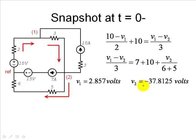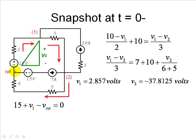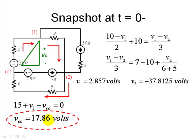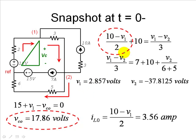But what we are looking for is actually the voltage in the capacitor in this circuit at zero minus. Going up from one node to the other using KVL: 15 plus V1 minus Vc0, that equals zero. From there we obtain that the voltage in the capacitor at zero minus is 17.86 volts — that is our first initial condition. The initial current in the inductor is given by the expression: 10 minus V1, divided by 2 ohms. Using that value, we get that IL0 is 3.56 amps. Those are the two initial conditions of the voltage in the capacitor and the current in the inductor.